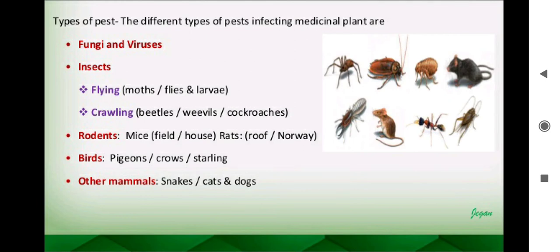Different types of pests include fungi and viruses. There are many fungi that cause necrosis of leaves, discoloration of the root, or falling of young branches and leaves before reaching maturity. Viruses such as tobacco mosaic virus attack plants like Rauwolfia, Eucalyptus, Vinca, and Datura — all these plants can be attacked by different types of viruses.